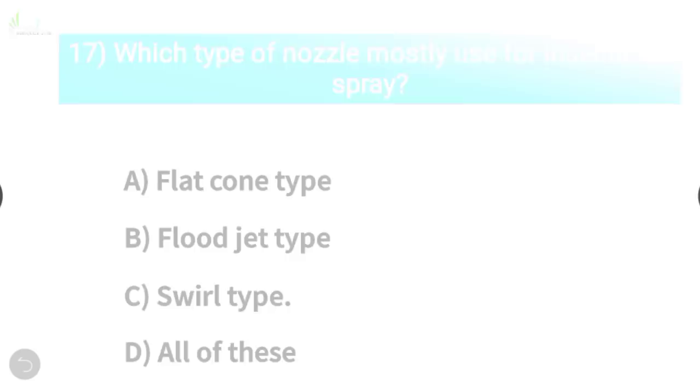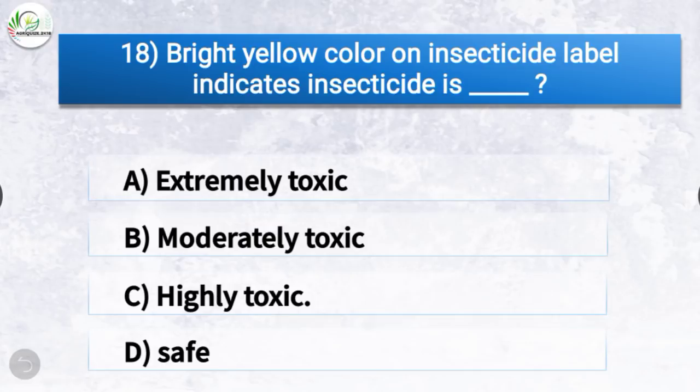Question number 18: Bright yellow color on insecticide label indicates insecticide which is? The correct answer is option C, highly toxic. Bright yellow color on insecticide label indicates that the insecticide is highly toxic.